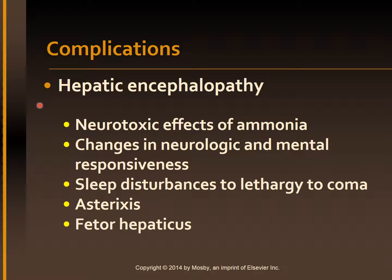Hepatic encephalopathy: a major source of ammonia is the bacterial and enzymatic de-amination of amino acids in the intestines. The ammonia that results from this process normally goes to the liver via the portal circulation and is converted to urea, which is then excreted by the kidneys. When blood is shunted past the liver via collateral vessels, or the liver is unable to convert ammonia to urea, ammonia levels in the systemic circulation increase, crossing the blood-brain barrier and producing neurologic toxic manifestations. Clinical manifestations include mood disturbances, mental status changes, speech problems, and sleep disturbances from lethargy to coma. Hepatic encephalopathy may be reversible with early interventions.